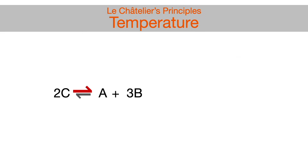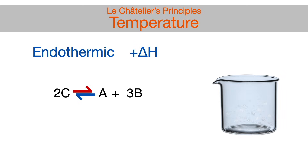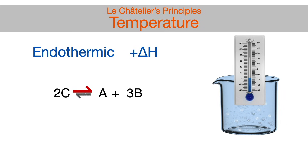If an equilibrium reaction is labeled as endothermic or has a positive delta H, or is described as absorbing heat or energy, or is decreasing the temperature of the surroundings, that means the forward reaction is endothermic and heat or energy is a reactant.